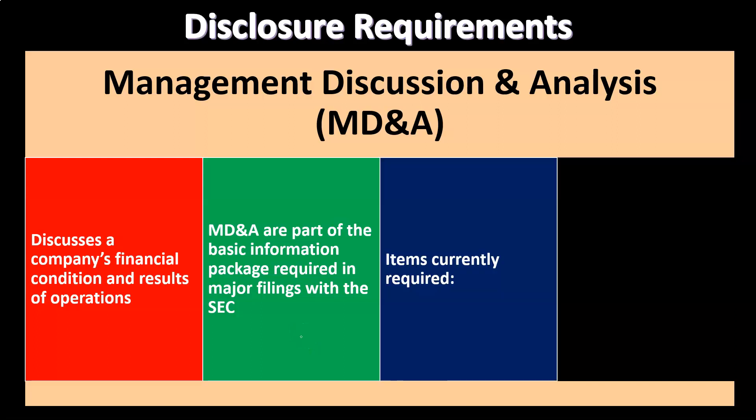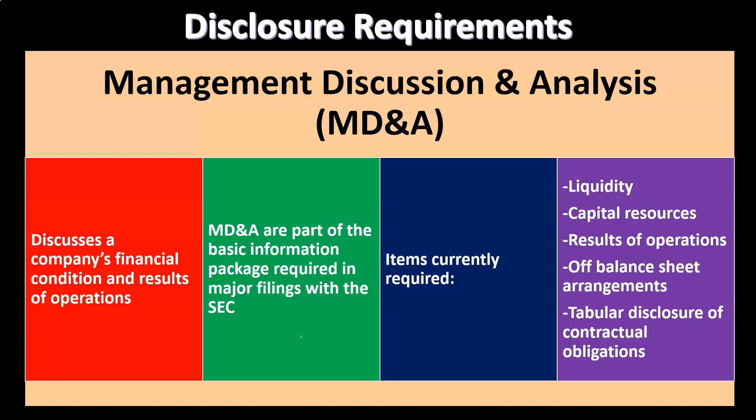Items currently required in the MD&A, the Management Discussion and Analysis, include: Liquidity, Capital Resources, Results of Operations, Off-Balance Sheet Arrangements, and Tabular Disclosure of Contractual Obligations.